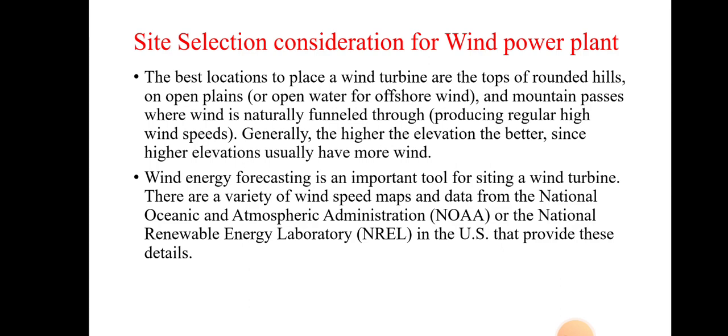The first consideration is that the best locations to place wind turbines are the tops of rounded hills, where airflow is available in large quantity. Also, open plains and mountain passes where wind is naturally funneled through, producing regular high wind speeds — where the speed of the wind is larger compared to other regions — are good locations. At such locations you can install the wind power plant easily.